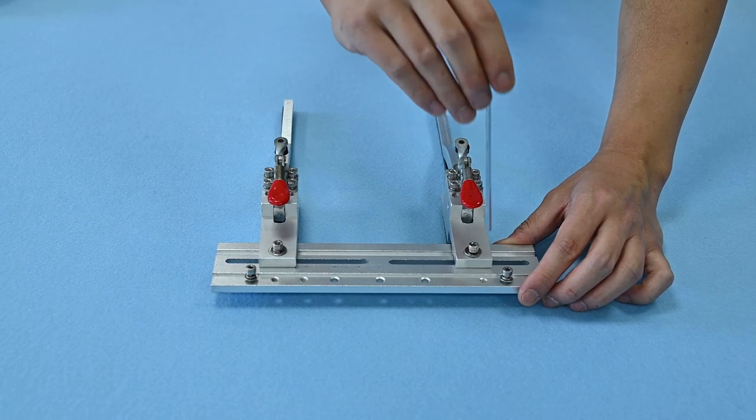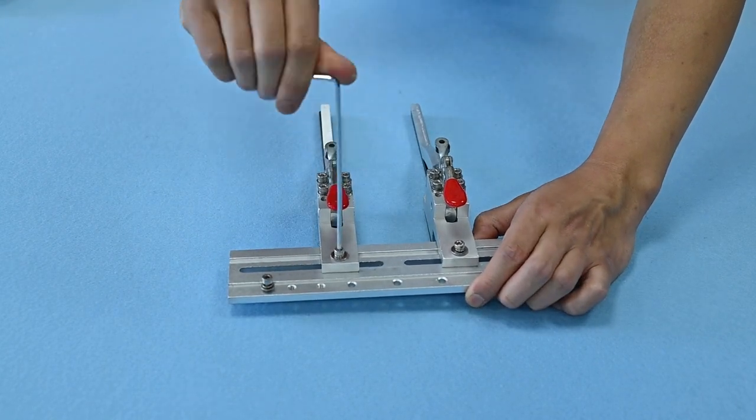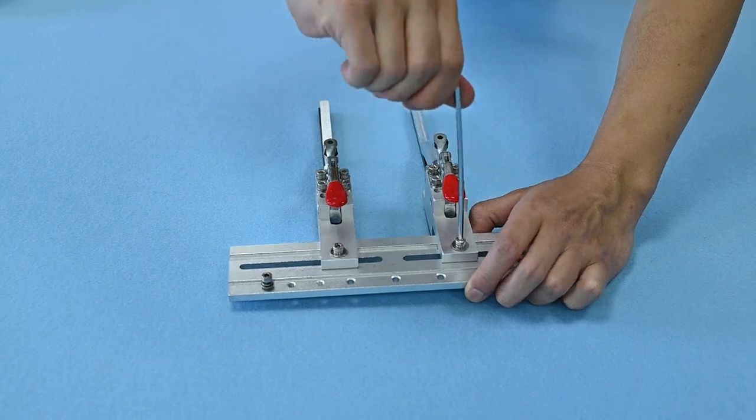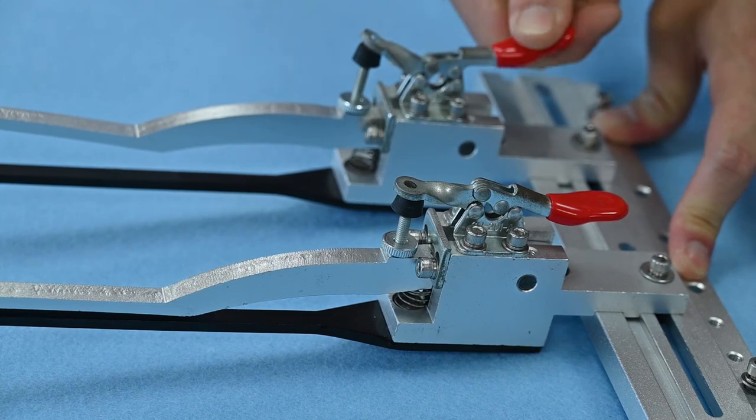Step 1. Use a 3mm hex wrench to loosen the screw on the clip to move left and right. Lift the handle to release the clip, press the handle down to close the clip.